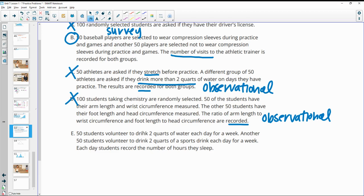E, 50 students volunteer to drink two quarts of water each day and 50 students volunteer to drink two quarts of a sports drink. Each day, the students record their number of hours of sleep. So now they're doing something, drinking water or a sports drink, and then they're looking at the impact on sleep. So this is experimental.